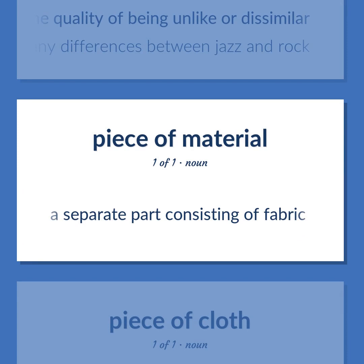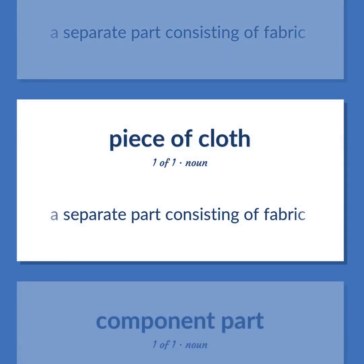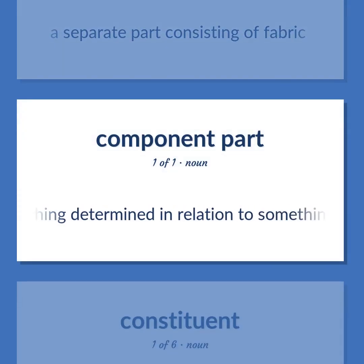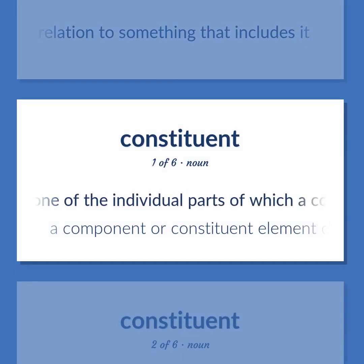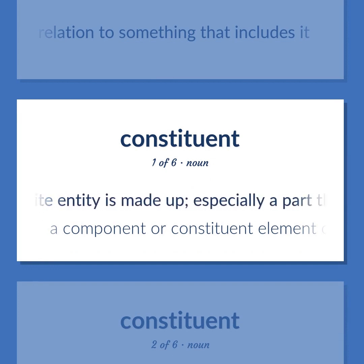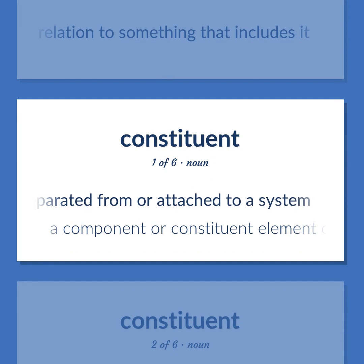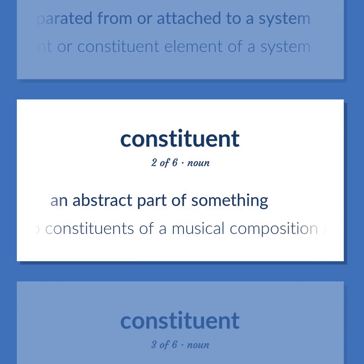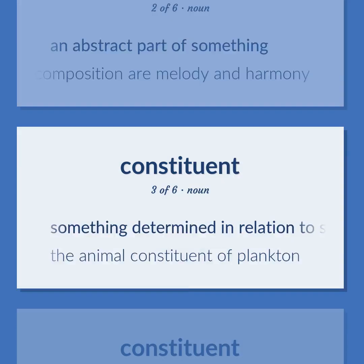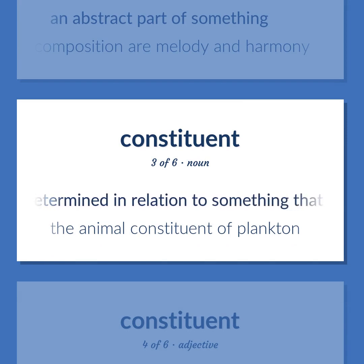Part: a separate part consisting of fabric. Something determined in relation to something that includes it. An artifact that is one of the individual parts of which a composite entity is made up, especially a part that can be separated from or attached to a system. A component or constituent element of a system. An abstract part of something — two constituents of a musical composition are melody and harmony. The animal constituent of plankton.